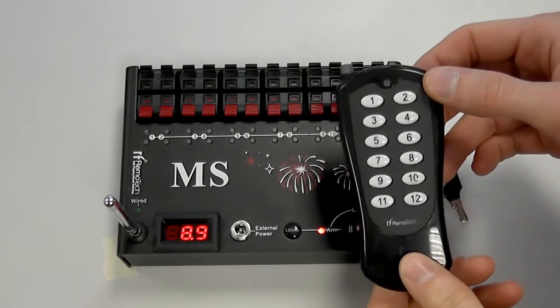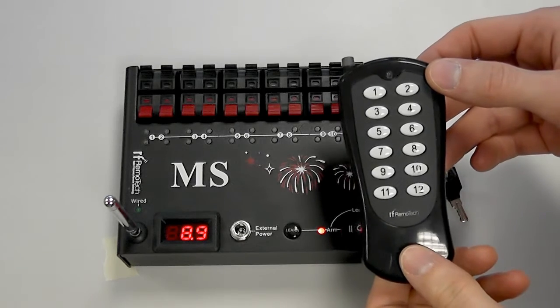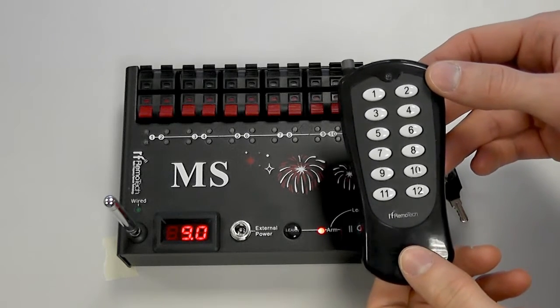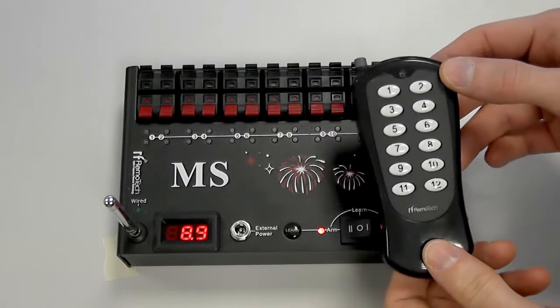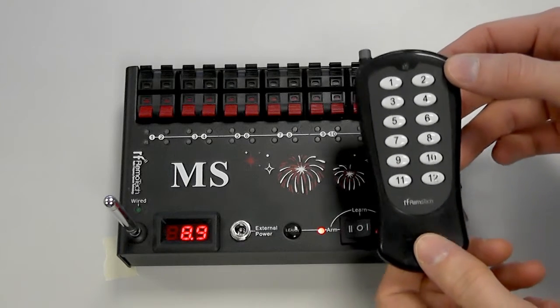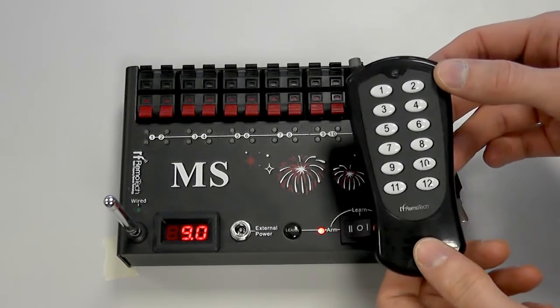Something to note about this is that when you fire a Q there is about a 3 second time delay between firing the Q and being able to fire the Q again. This is to prevent you firing a Q repeatedly into a dead short and damaging the firing transistors in the system.